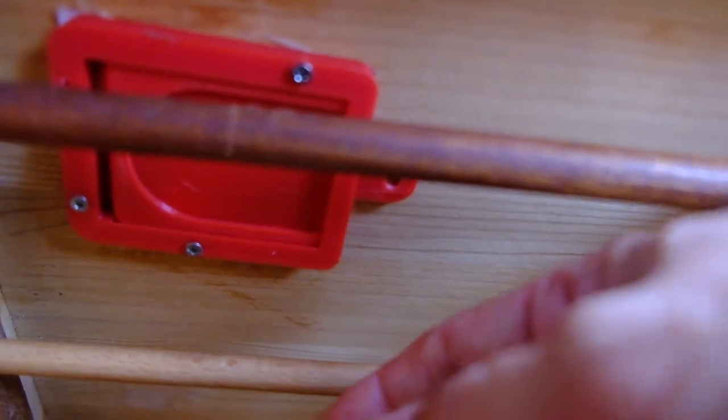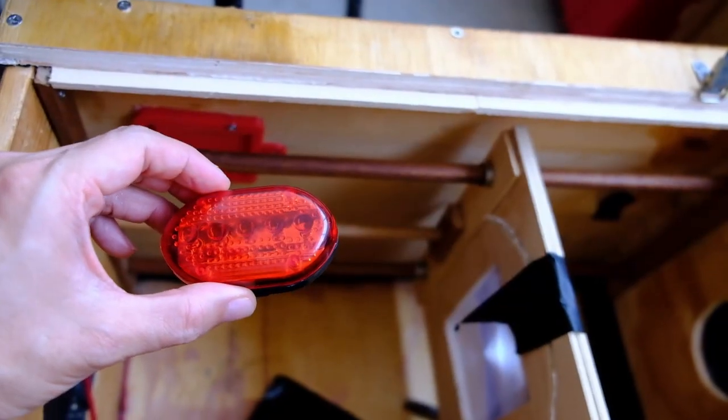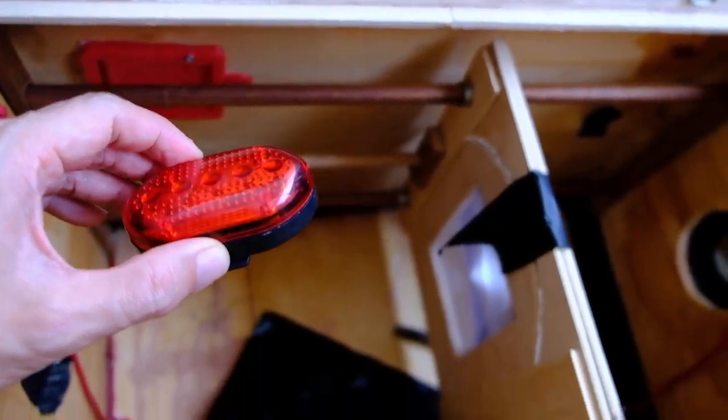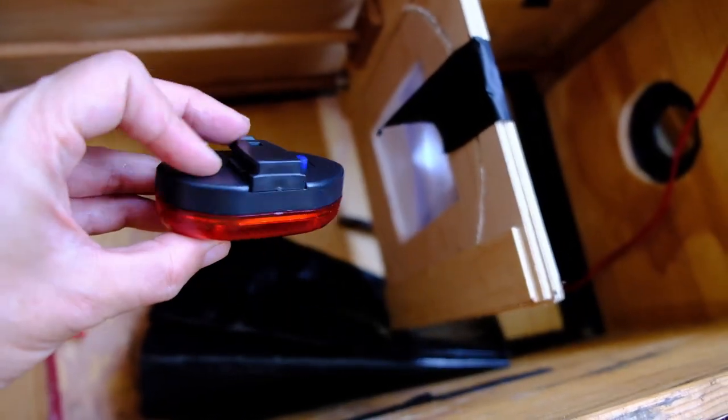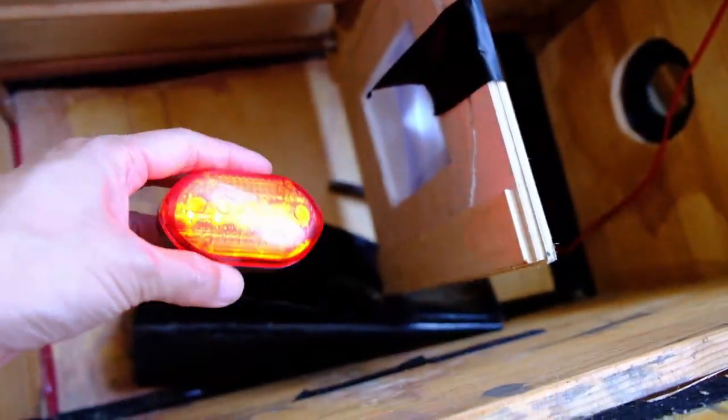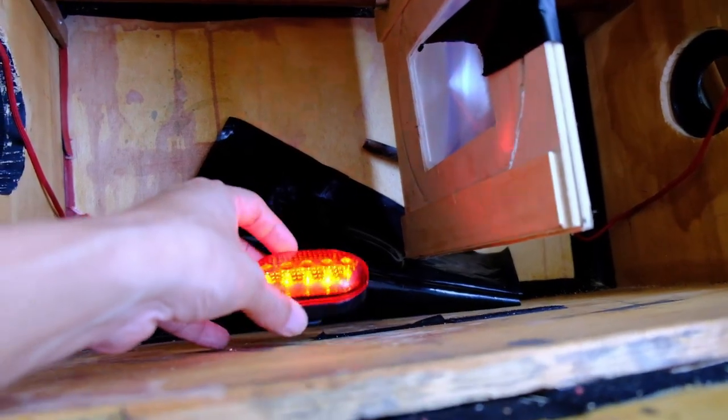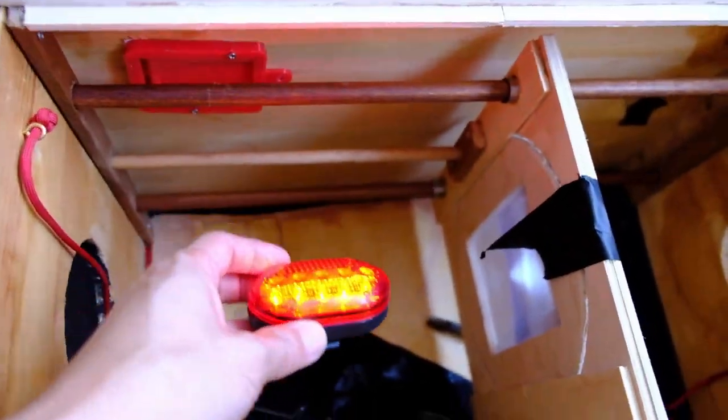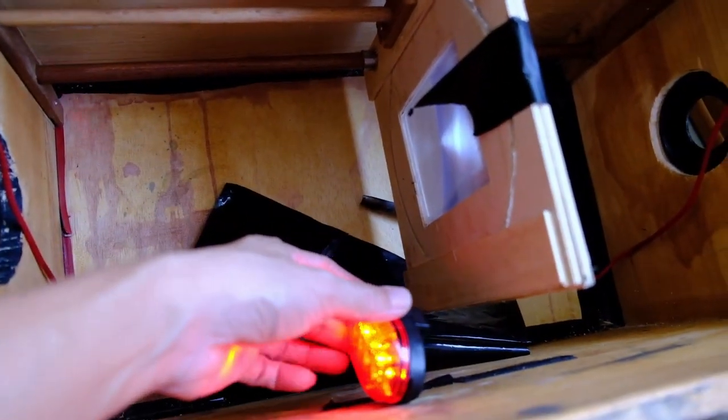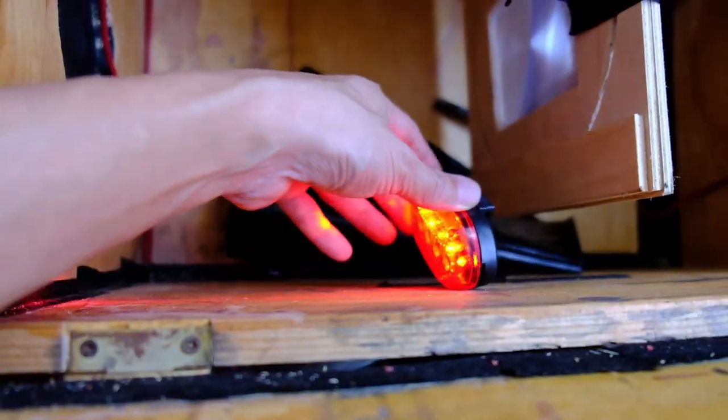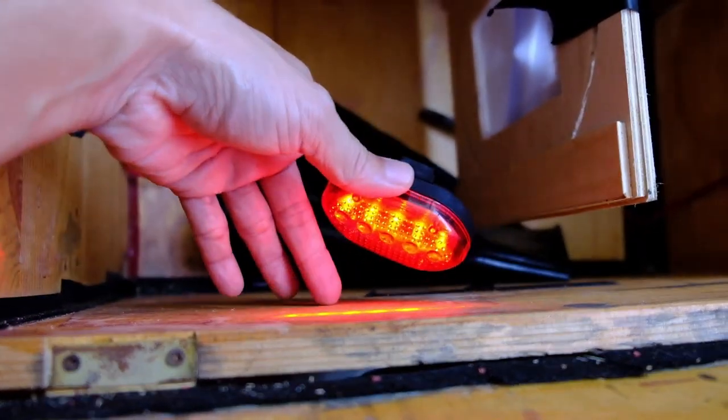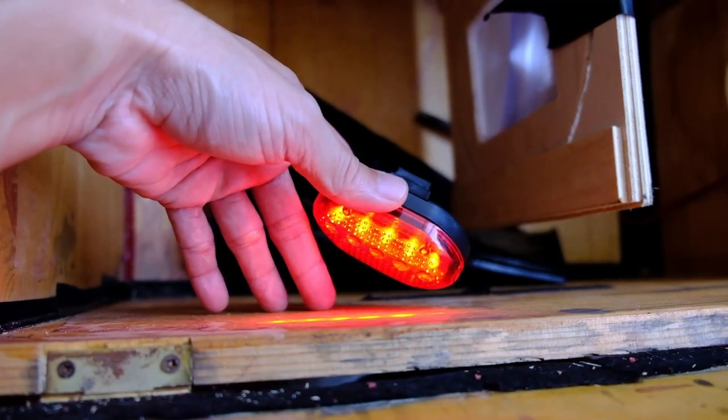So this will be the bicycle light that I'm going to put inside the box. This is a red LED. So when I peep through the eyepiece this light will be placed somewhere here and that's where the developer tray will be and hopefully from there I can see the image being developed.